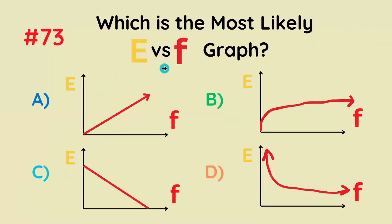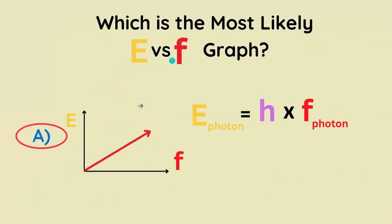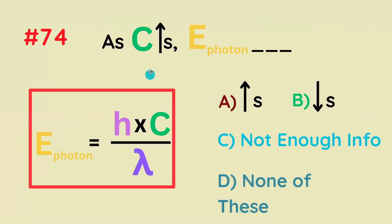Which of these graphs most likely depicts E versus F? It's going to be A, because E and F are directly proportional — when one increases, the other increases. As C increases, what happens to the energy of the photon? It's actually none of these, because C is a constant.